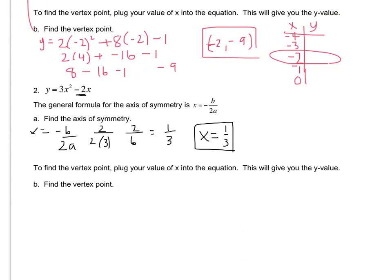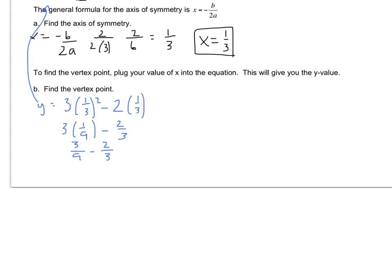Kind of annoying, but let's plug it in and find out where that official vertex point is. So go back up to the equation. y equals 3 times 1 third squared minus 2 times 1 third. So that's 1 ninth, and that's 2 thirds. So that's 3 ninths minus 2 thirds.